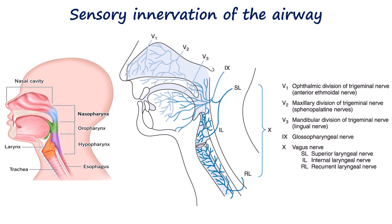Hello everyone and welcome back. In our last video, we went over the sensory innervation of the airway and why it matters. These nerves and the regions that they supply are exactly what we have to target when we prepare someone for fiber optic intubation. If we can block or numb those areas properly, we can prevent reflexes like gagging, coughing, or even laryngospasm while still letting the patient breathe on their own.